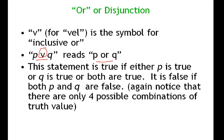With binary operators like this joining two declarative sentence variables, we have four possible combinations of truth values. We'll see more about truth tables in the next video.